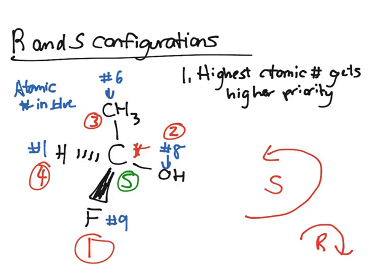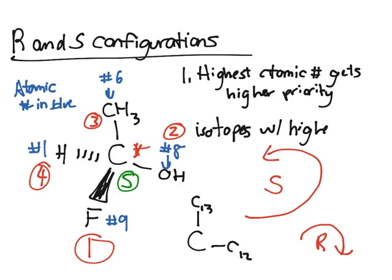And we'll do more practice, but one thing to remember is if you have isotopes, so let's say if you had a carbon-13 and a carbon-12, the carbon-13, isotopes with higher mass have priority. So carbon-13 would be number 1, and carbon-12 would be number 2.